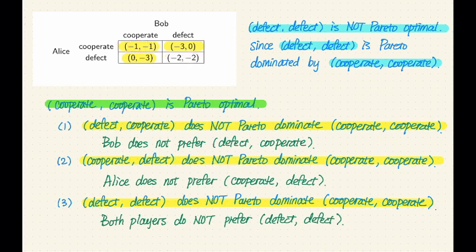Verifying an outcome is Pareto optimal is quite a bit of work because you need to verify that the outcome is not Pareto dominated by any other outcome. Notice here we finally have a really good example to show the nuance of this definition. Cooperate-cooperate is Pareto optimal, but it does not Pareto dominate all other outcomes. The definition of Pareto optimality does not require Pareto dominance over all other outcomes — that's a much stronger condition. Instead, we only require that this outcome is not Pareto dominated by any other outcome.